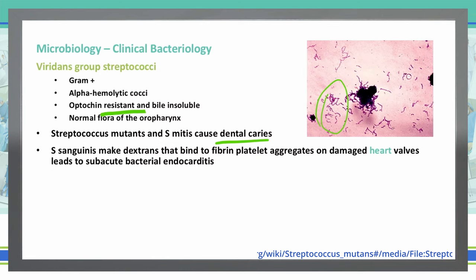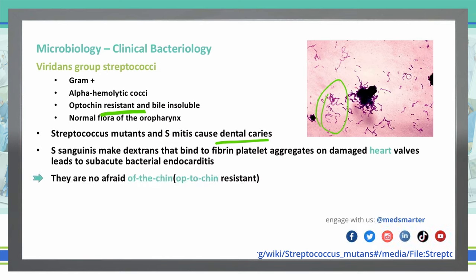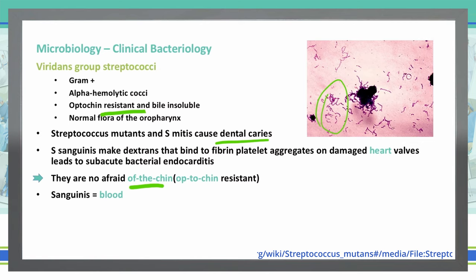We can remember the viridans group using some mnemonics. The Strep viridans group is in the oral pharynx naturally, so they are not afraid of the chin — optochin — so they're optochin-resistant. Specifically, Strep sanguinis: think of blood in the heart, and the heart is where we can have endocarditis due to Strep sanguinis.